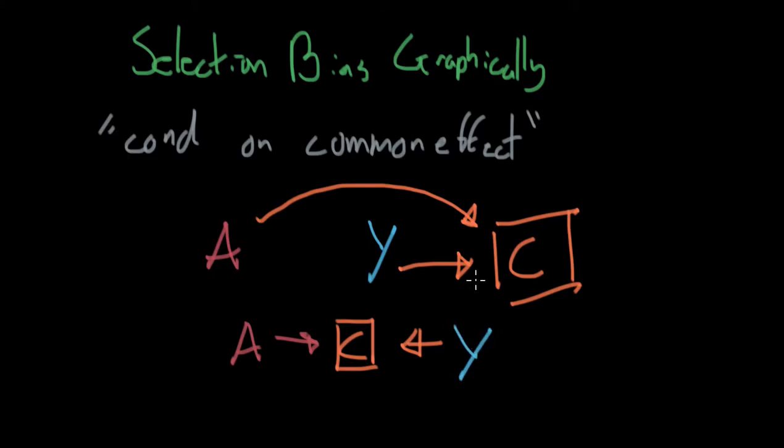So in this case, we had a blocker, which happened to be C. However, we conditioned upon this blocker and now there's an associative link between A and Y. Okay. This is the basic sort of selection bias example. We're going to be going over lots of more different graphical representations of selection bias, just to get your feet wet.